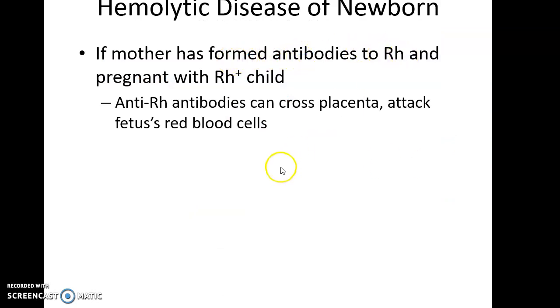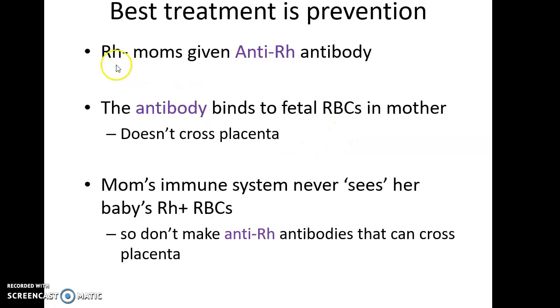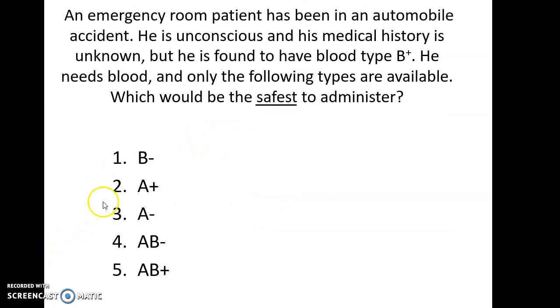If the Rh negative mother has anti-Rh antibodies that could cross and attack the fetus's blood cells, you give her antibodies against the anti-Rh antibodies. Those anti-Rh antibodies then can't cross — they are too wrapped up being bound by these other antibodies — and that helps keep the infant safe. For the emergency room practice question: a patient with a spinal accident, unconscious, medical history unknown, blood type B positive — which blood is safe to administer? B positive or B negative — same or less. All other options containing A antigens would kill them.